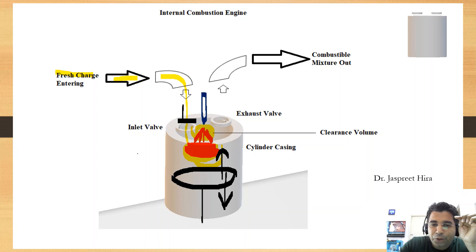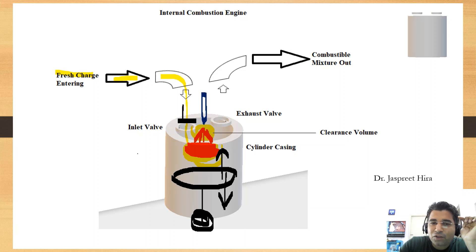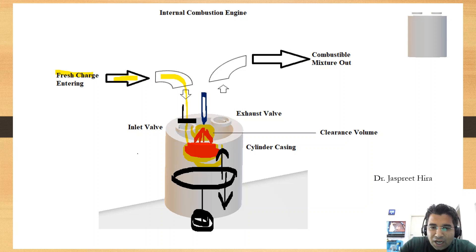That downward direction of the piston produces rotation in the crankshaft, which produces power. So summarizing where these processes take place: fresh charge enters from one side, accumulates in the cylinder, inlet valve closes, charge is compressed by the piston upward, then ignited by the spark plug producing expansion.